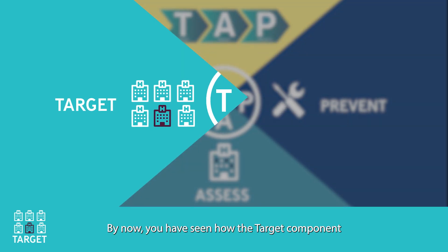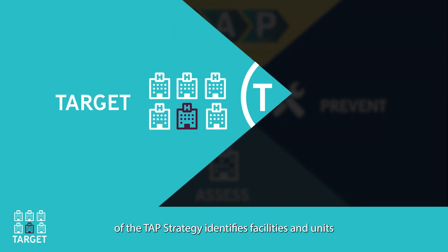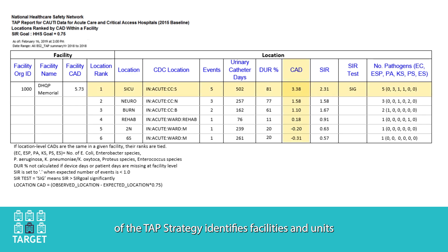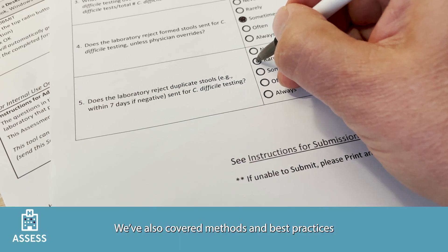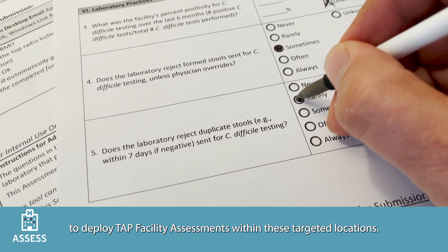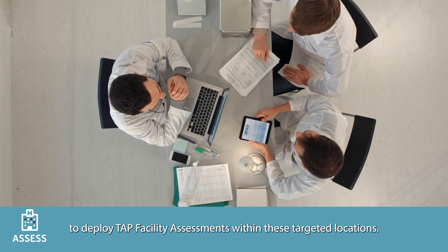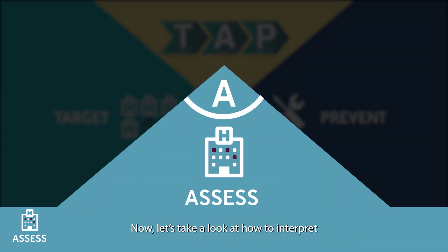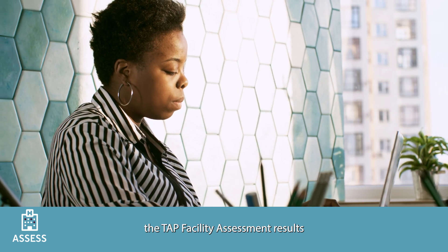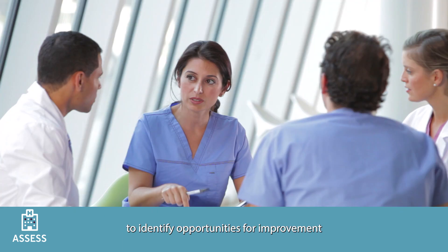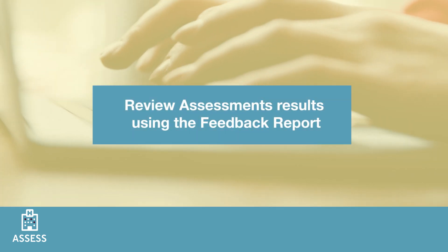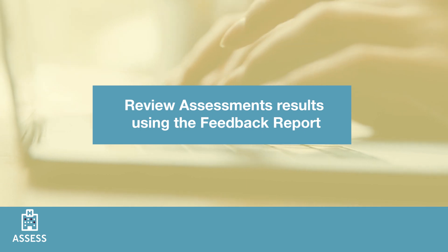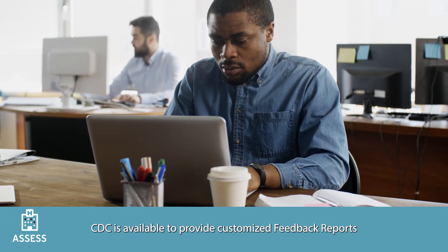By now you have seen how the Target component of the TAP strategy identifies facilities and units with the greatest room for reducing the rate of HAIs and achieving hospital safety goals. We've also covered methods and best practices to deploy TAP facility assessments within these targeted locations. Now let's take a look at how to interpret the TAP facility assessment results to identify opportunities for improvement and guide prevention efforts.